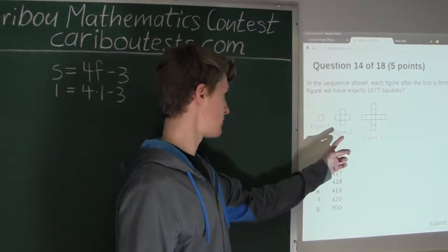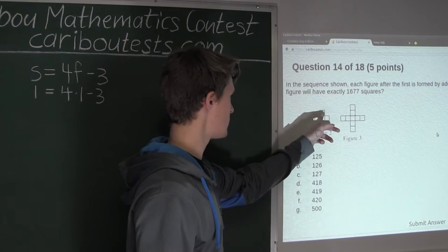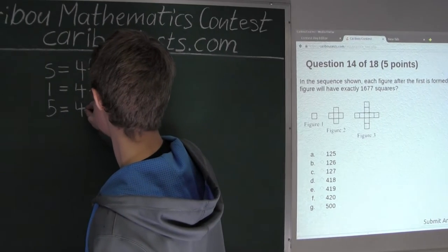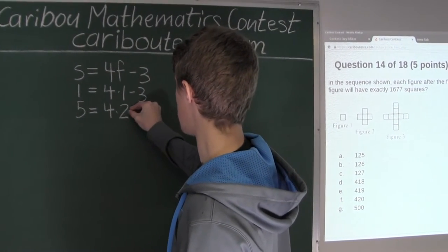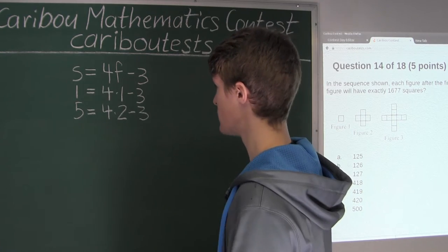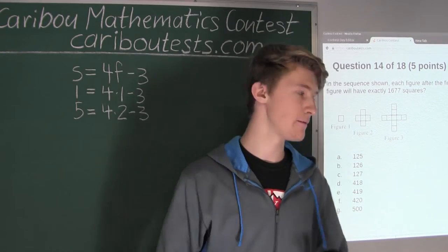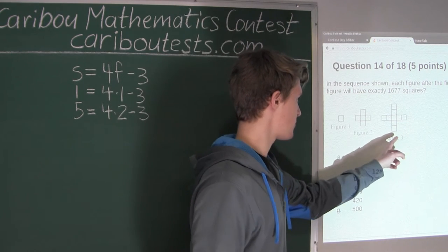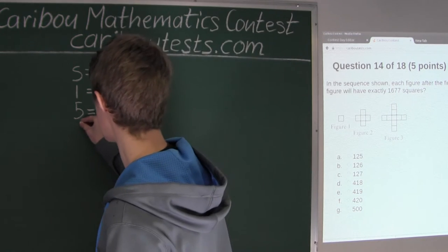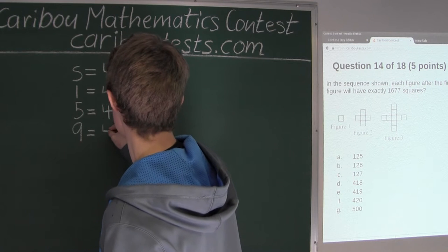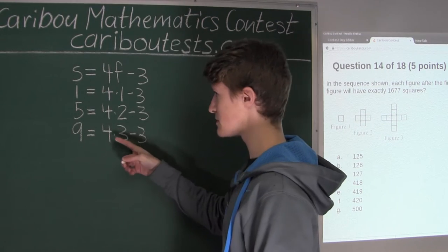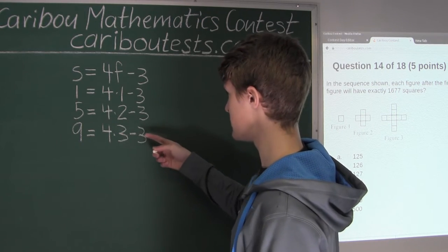Let's verify with figure 2, which has 5 squares: 5 = 4 times 2 minus 3 = 8 minus 3 = 5. That works. And for figure 3, there are 5 in a line plus 4 more, so 9 squares: 9 = 4 times 3 minus 3 = 12 minus 3 = 9. So we can assume the formula S = 4F - 3 works for any positive integer F.